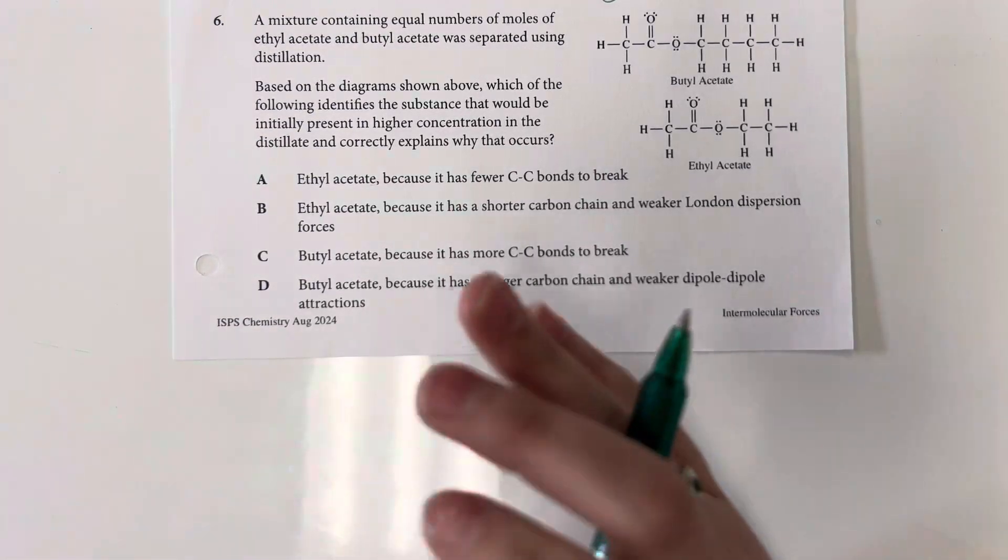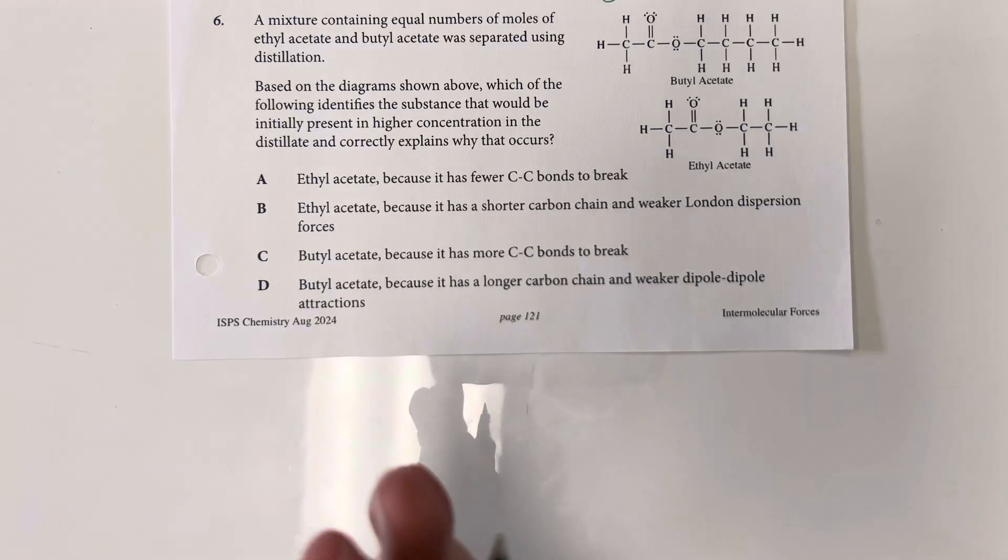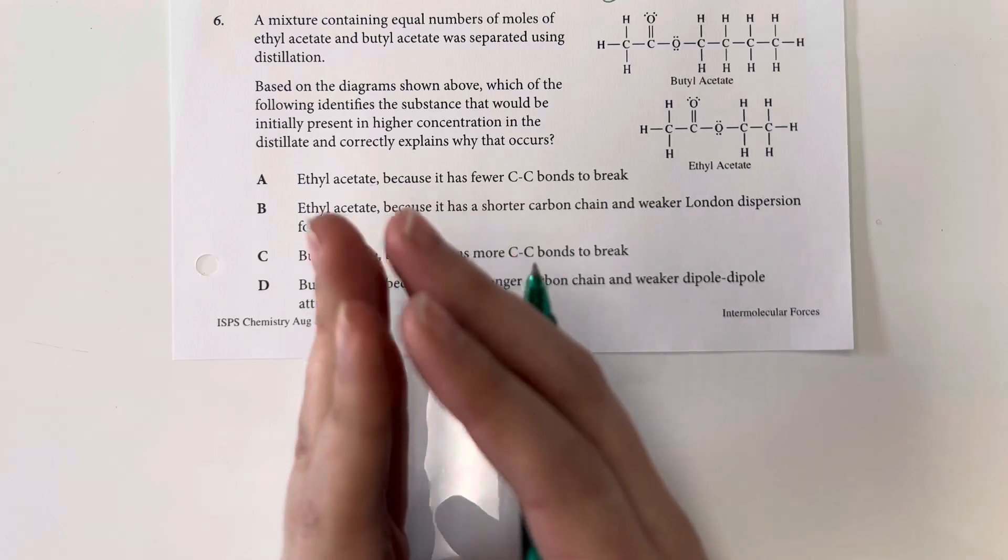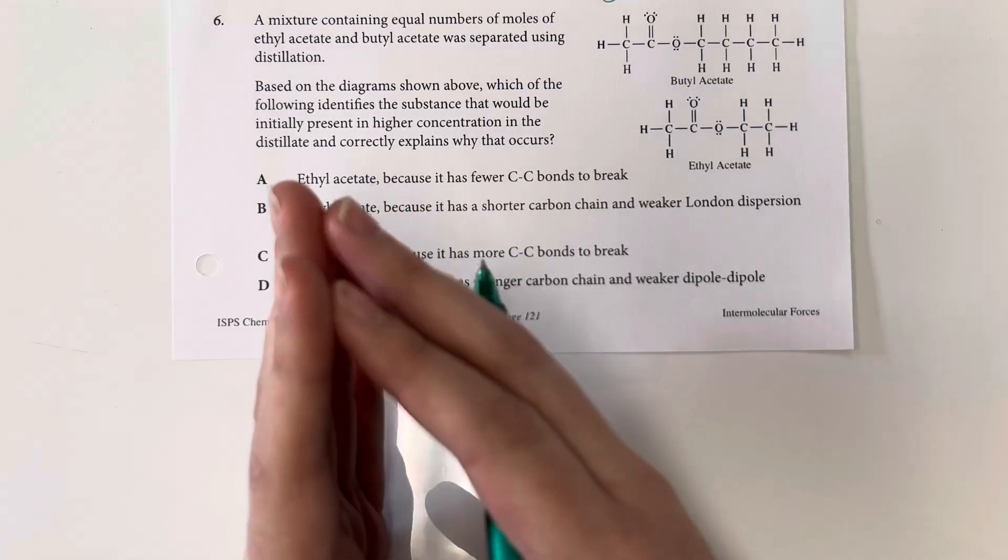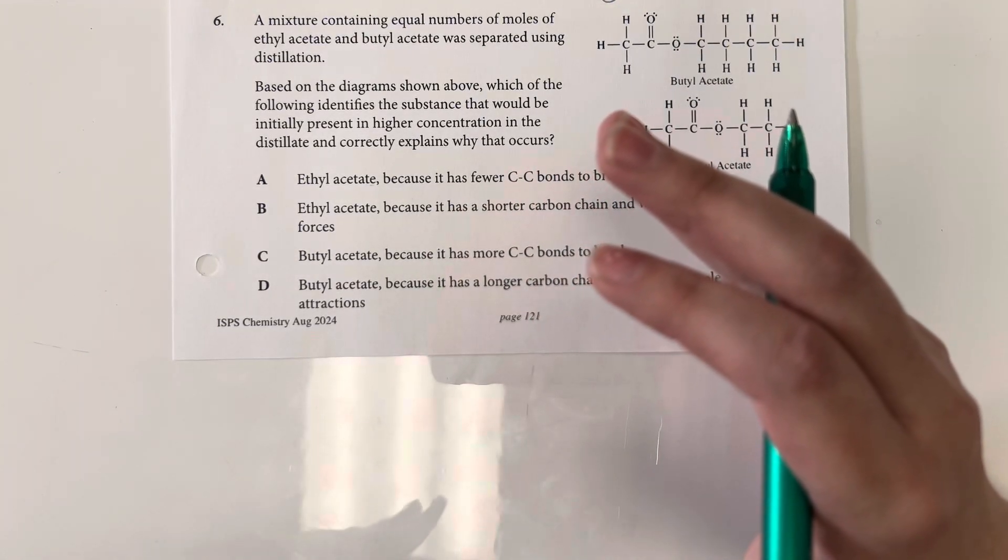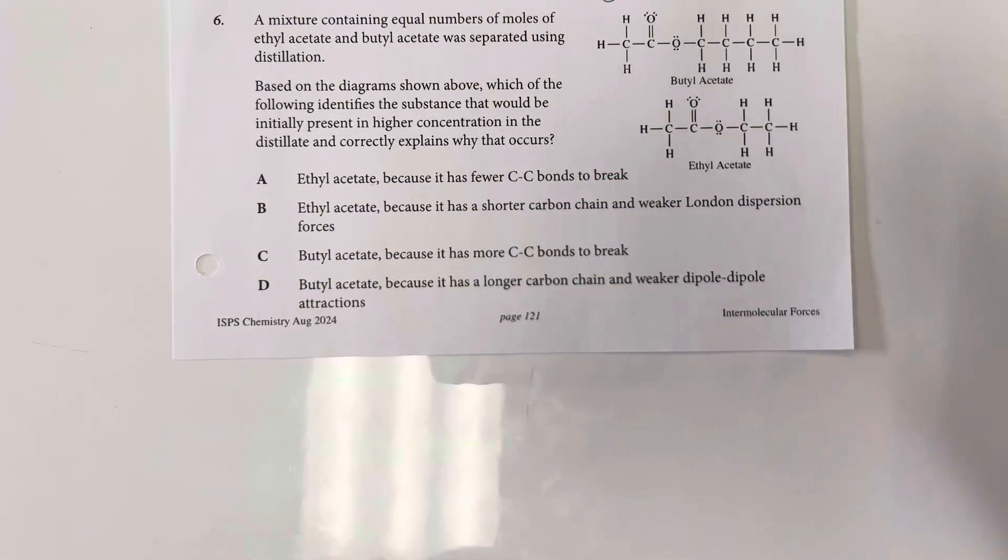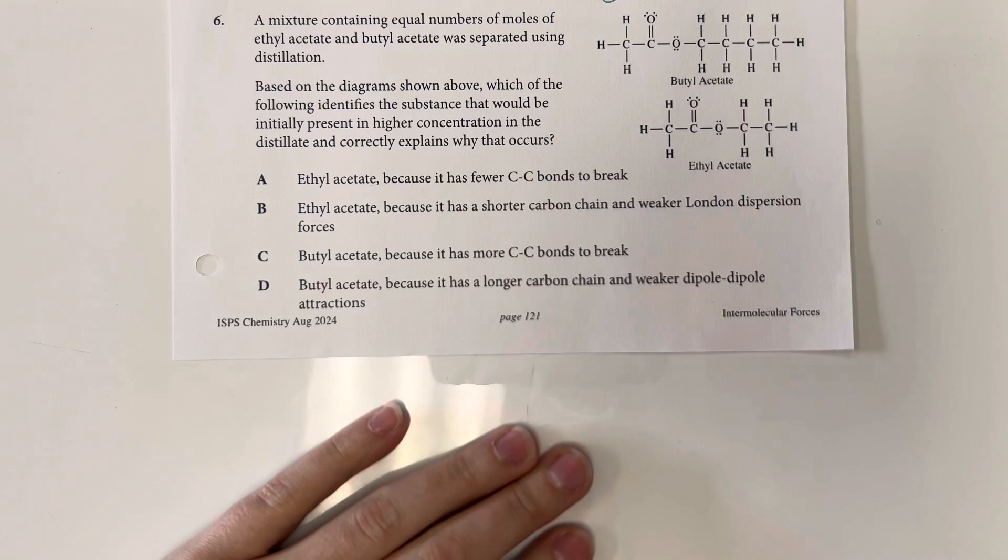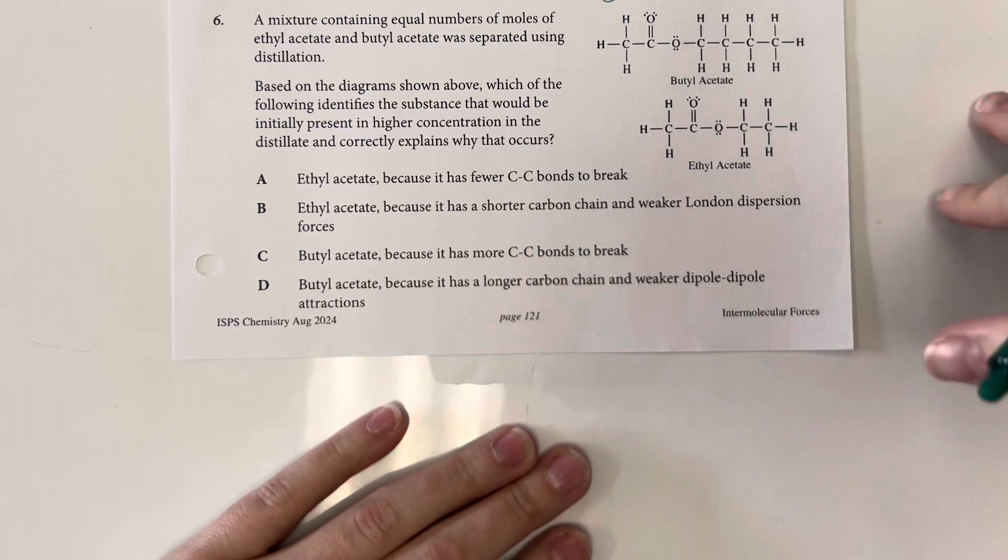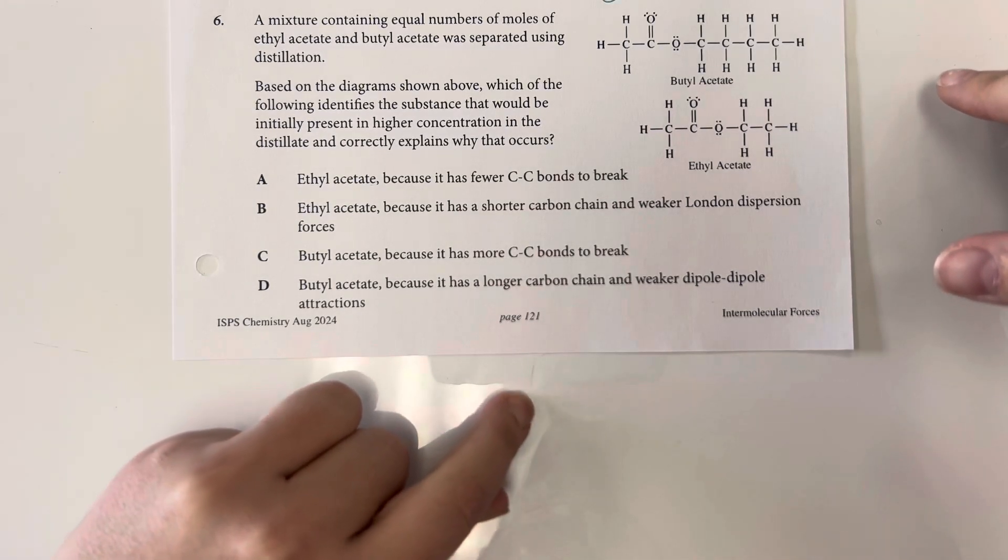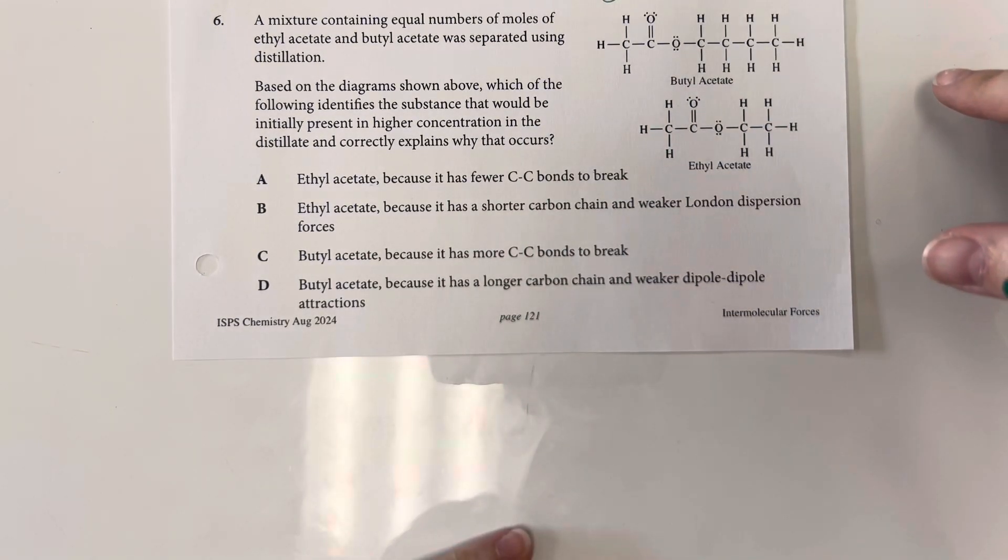So the distillation is going to take place with the less sticky, the molecule that has a lower amount of intermolecular forces coming out first, followed by the more sticky, the molecule that's going to have a higher amount of intermolecular forces coming out second. So I am going to look for whoever is going to have a larger intermolecular force and that is going to be who comes out second, which means that that is not who is going to be the one that is in a larger proportion in the first distillate.